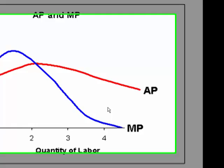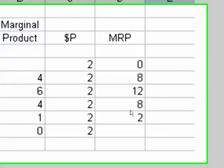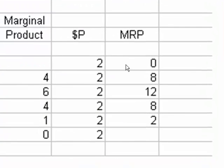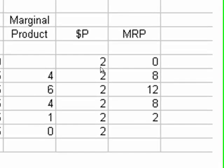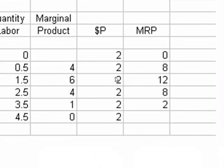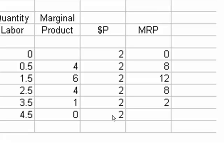In here, I have calculated the marginal revenue product. I have assumed a perfectly competitive market. So the firm is a price taker. I have simply multiplied the marginal product times the product price to come up with the marginal revenue product.